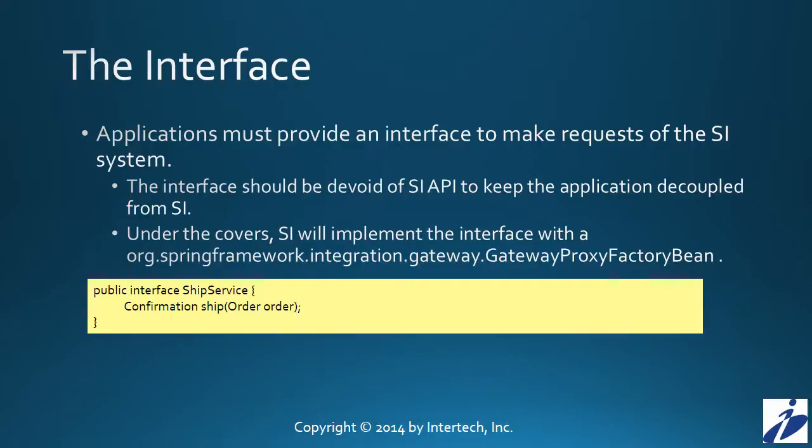Creating a gateway in Spring Integration is actually quite simple. One needs just to create an interface that will be implemented underneath the covers by Spring Integration by a gateway proxy factory bean. That interface should be devoid of all Spring Integration knowledge — in other words, be decoupled from any Spring Integration API or, for that matter, any messaging API. Shown here is a small example: an interface called ShipService defines one method, ship. The idea is your application would call this ship method, passing in an application's order object and getting back an application's confirmation object. Nowhere here do we see any Spring Integration API, and that's the point. It serves as a means of facade to allow the application to call on a Spring Integration system without having knowledge of that Spring Integration API.